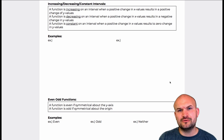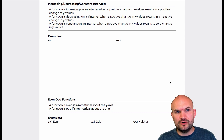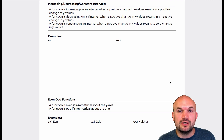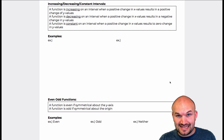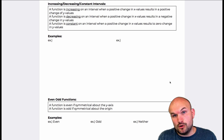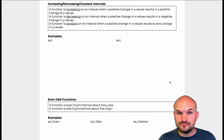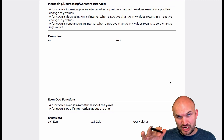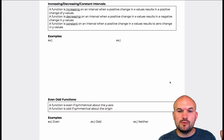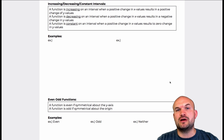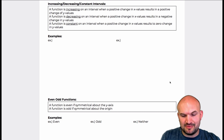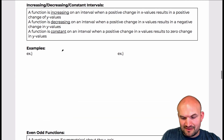The main thing to really understand is when we're looking for — let's just start with increasing — when we're looking for writing down the increasing intervals, we're looking for the values of x when the graph is going up, or when the y values have a positive change. So when we're describing a function, we want to describe our function based on the x values.